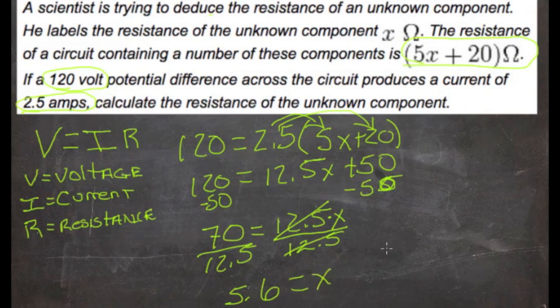So our answer is x equals 5.6 ohms. My ohms symbol is going to be kind of funny looking, but you know, I get the idea. That's it.